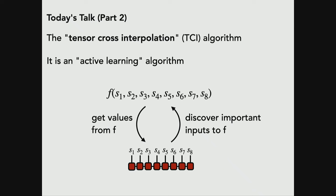Once you have the function, the algorithm does a process called active learning. It starts by getting some values from the function and building an approximation. Then, based on its own approximation and more calls to the function, it discovers new important inputs and queries more data, running this loop until it converges. It's a really nice algorithm because of this active learning property. It doesn't have to be a probability distribution — it could just be a curve you want to fit. I'll show examples, including a function equal to the sum of a bunch of Feynman diagrams.